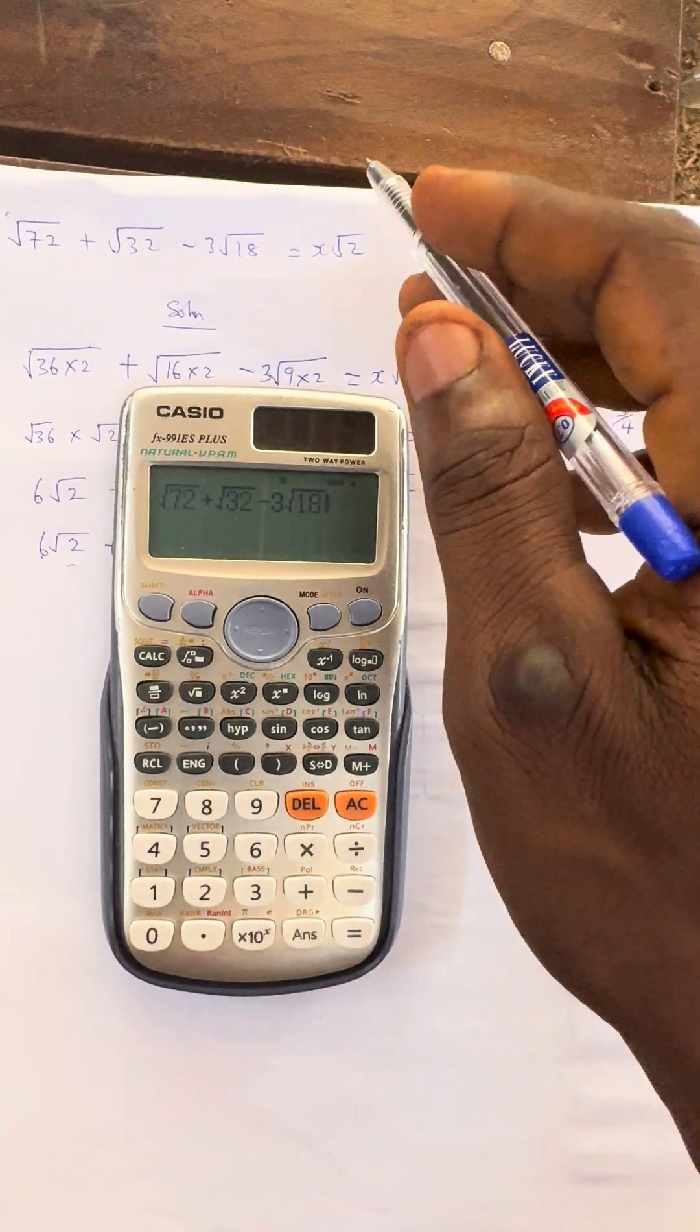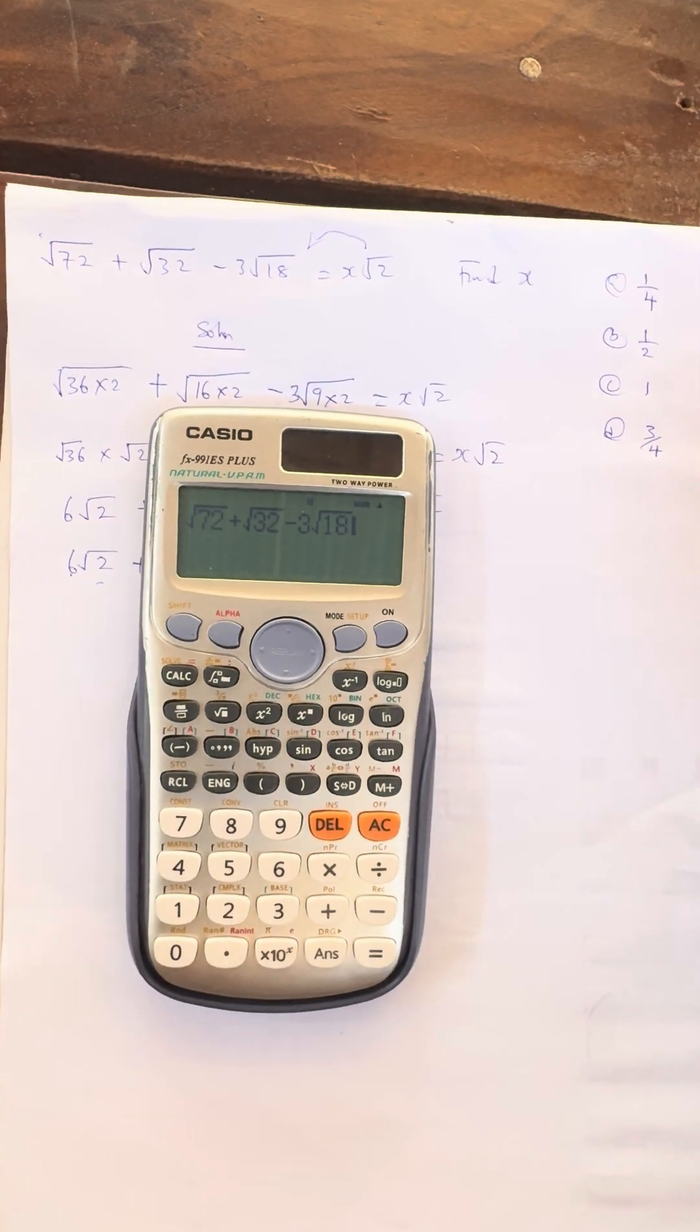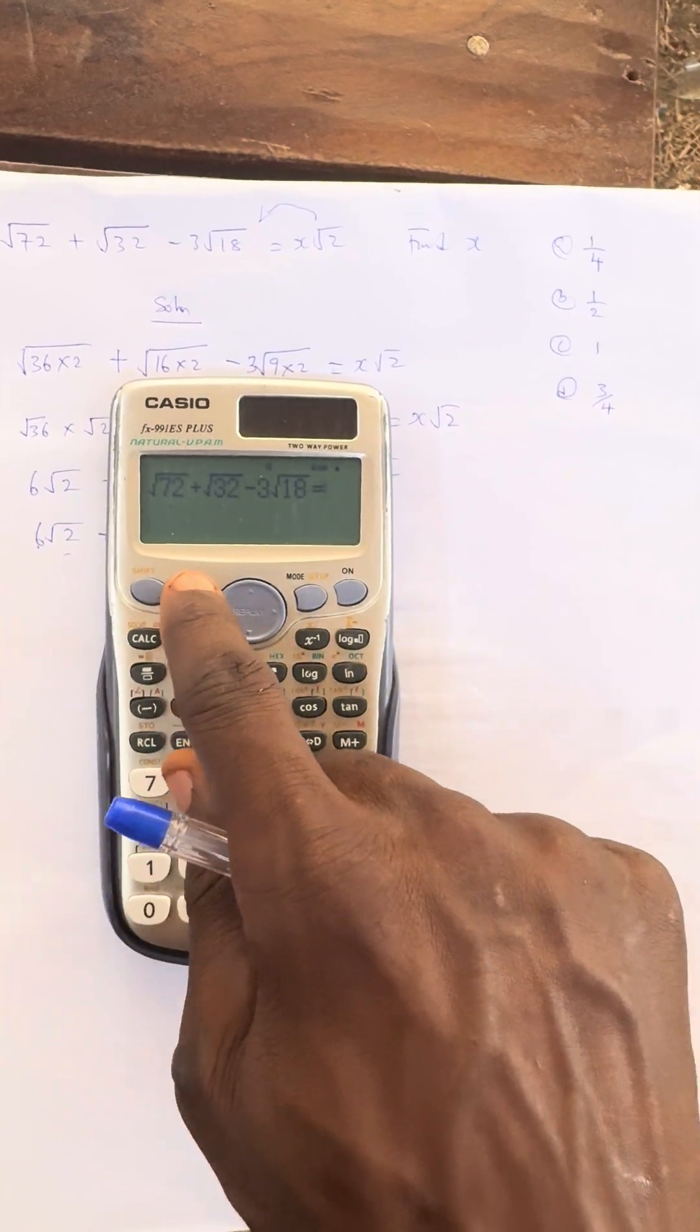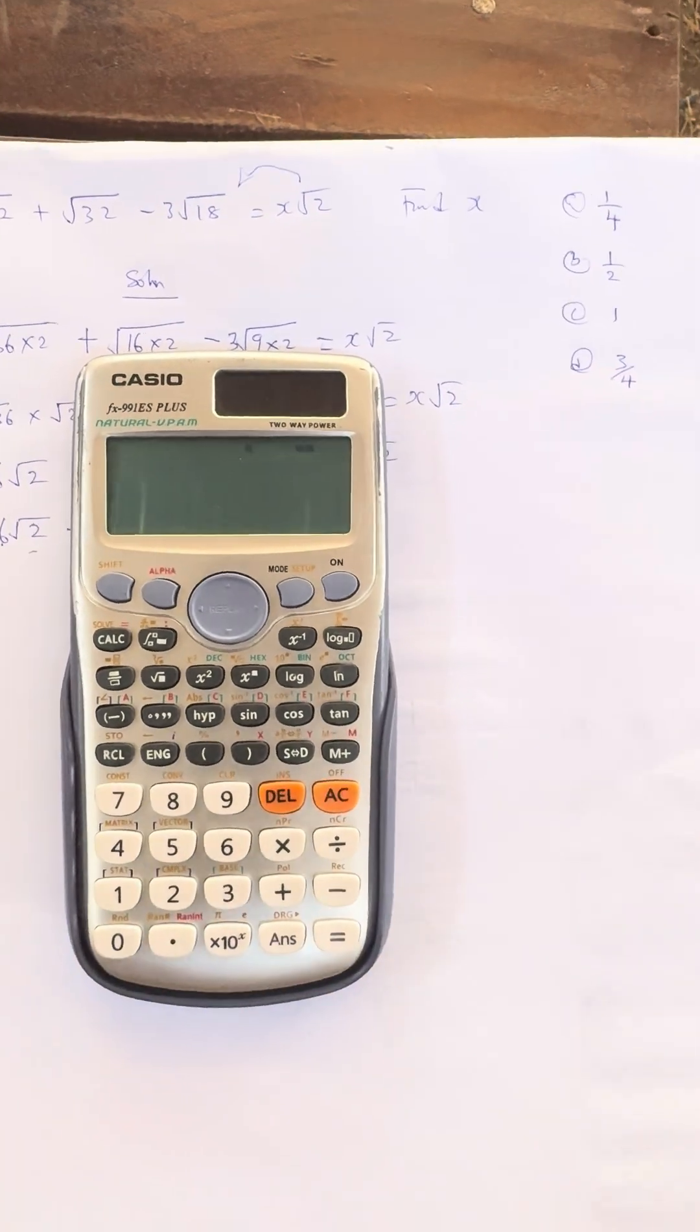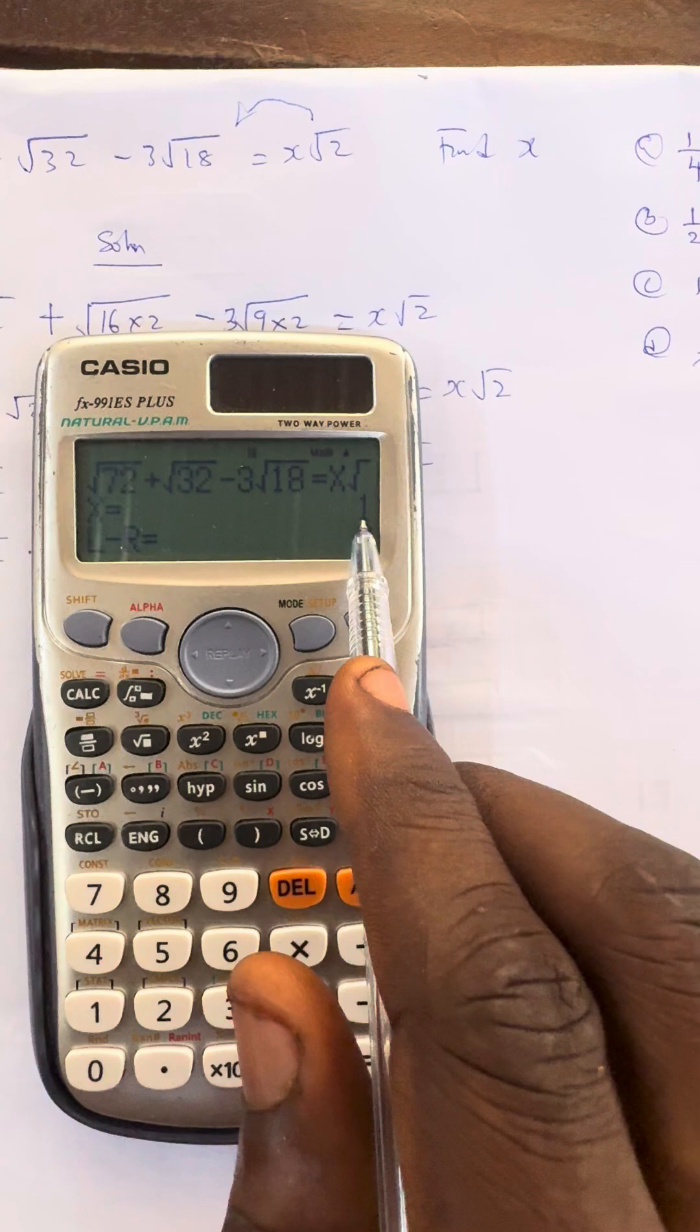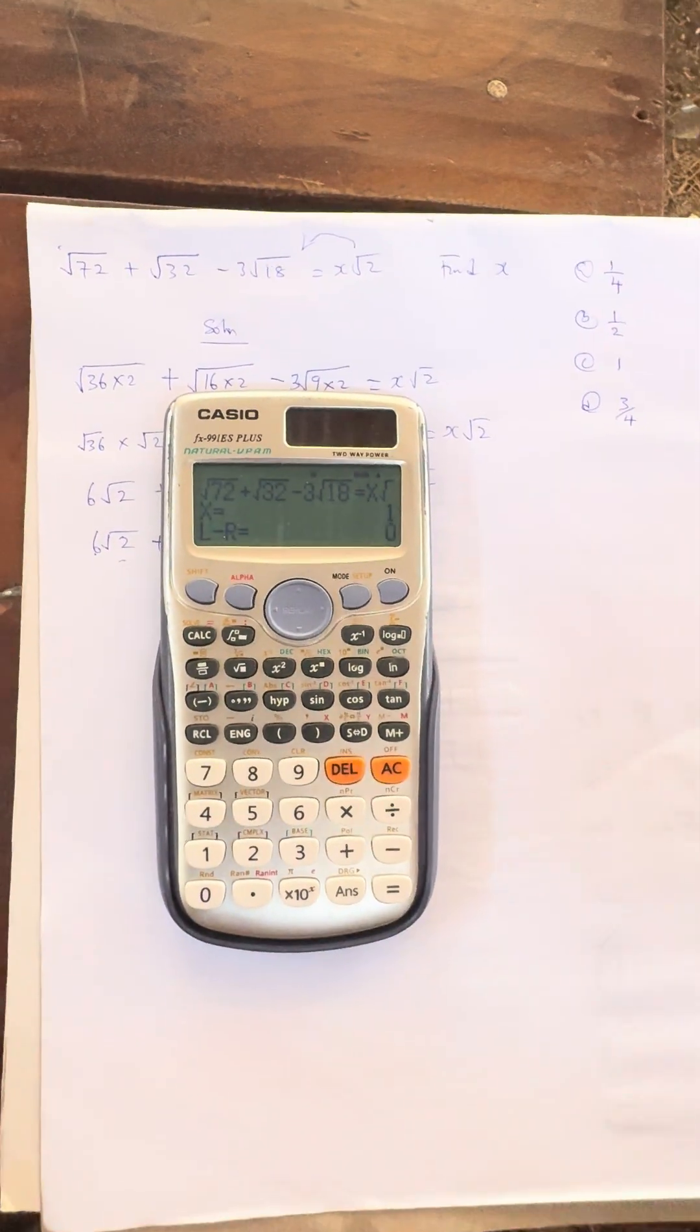I will bring this value inside. Or better still, let's use the software. Press alpha and calculate, then press alpha x, √2, then press shift calculate, then equals 2. Now can you see, it gave us the answer of x. x equals 1. Can you see that x equals 1 from the question.